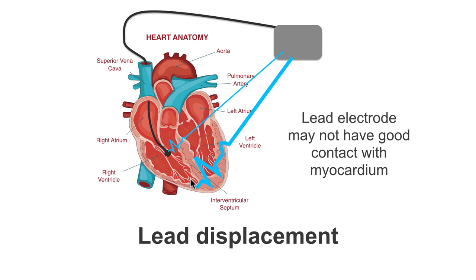Lead displacement is where the lead has come away from the myocardium or the position that it is meant to be in. This occurs most commonly in the first 4 to 6 weeks after implant, where the pacing lead has not had a chance to fully fixate itself to the myocardium. So the lead is displaced and the electrode is no longer in direct contact with the myocardium, making it much more difficult for the pacemaker to sense the depolarization of that tissue. The signal becomes much quieter and smaller, so the pacemaker will not recognize it as a ventricular depolarization.